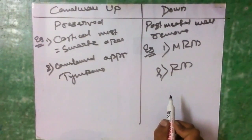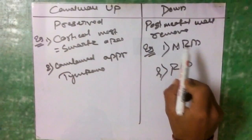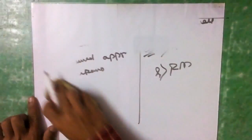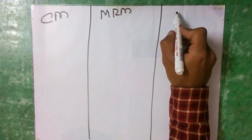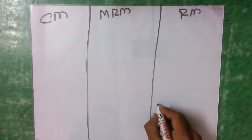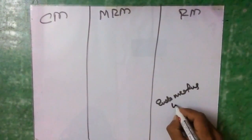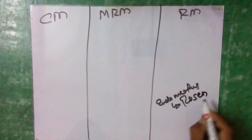We will study cortical mastoidectomy, modified radical mastoidectomy, and radical mastoidectomy. Before studying these, we should know three approaches for mastoid surgery. The first is the endomeatal approach, where the approach is via the external auditory meatus; the incision used is the Rosen incision.